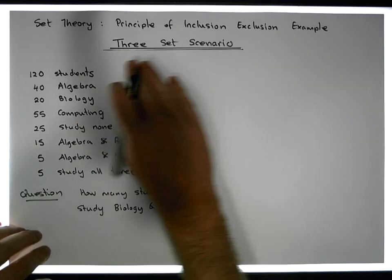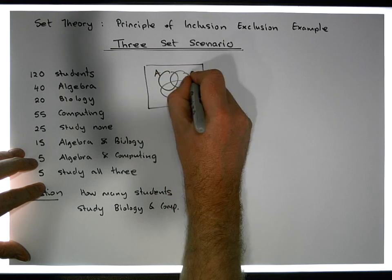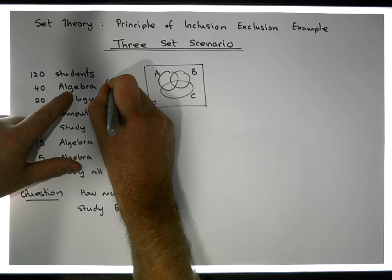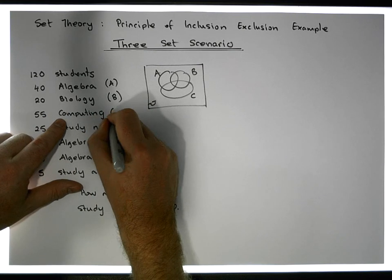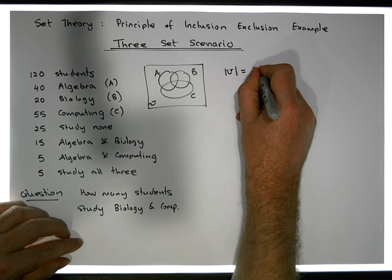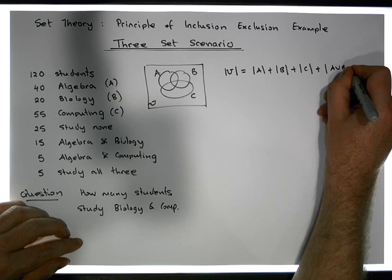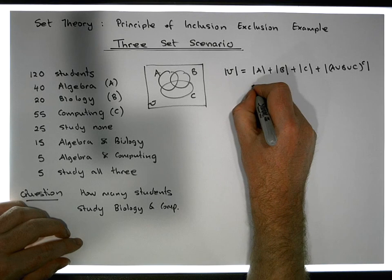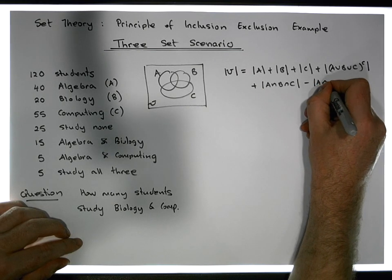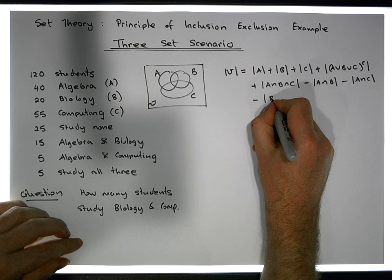We're going to use the principle of inclusion-exclusion for a three-set scenario. Let's recap: with three sets A, B, and C — where A represents algebra, B represents biology, and C represents computing — the size of the universe equals |A| + |B| + |C| + |complement of A∪B∪C| + |A∩B∩C| minus |A∩B| minus |A∩C| minus |B∩C|.